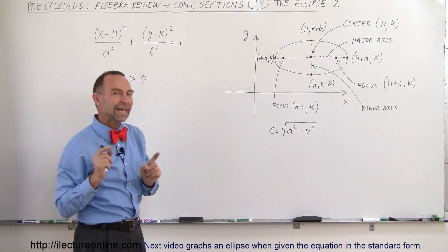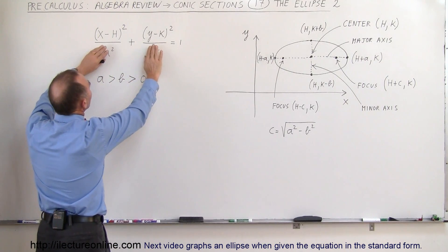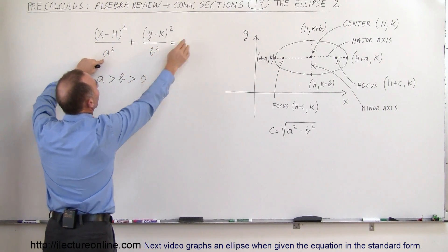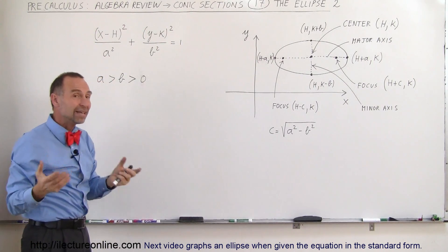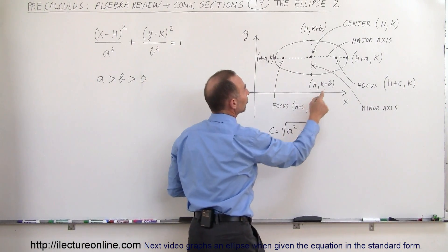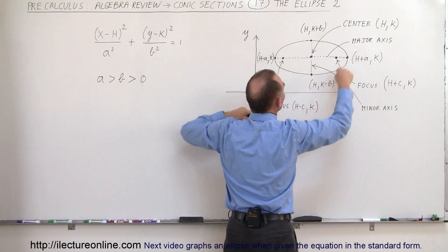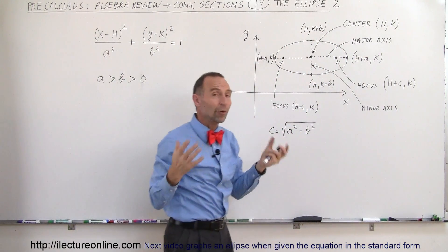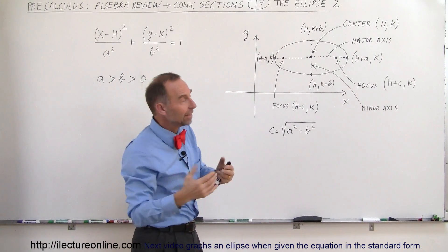Now, notice what happens when a becomes equal to b. Well, if a is equal to b, then this becomes the equation of a circle. If a is equal to b, then a² minus b² is equal to zero, and then the foci will come in and be right at the center, and that means we have a circle. Which means that the foci of an ellipse go to the center if the ellipse becomes a circle, and that makes sense.